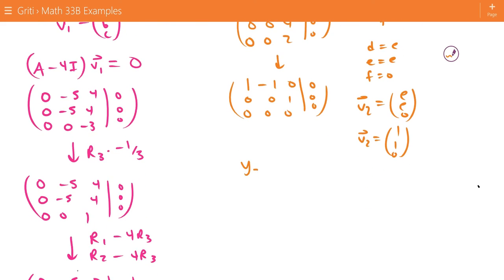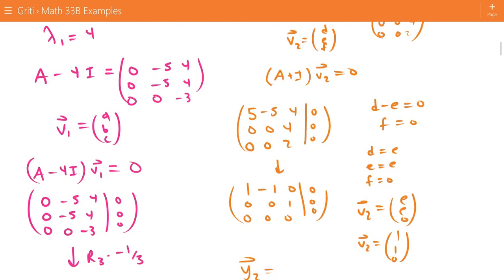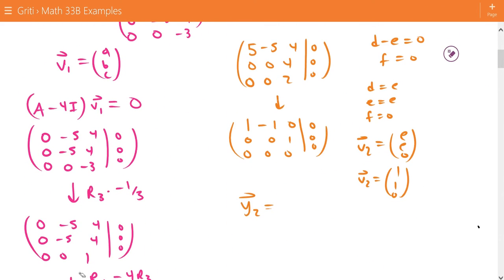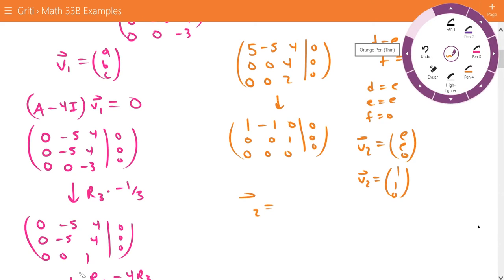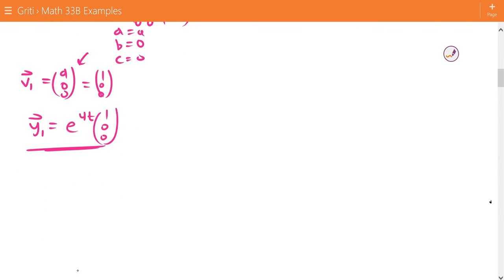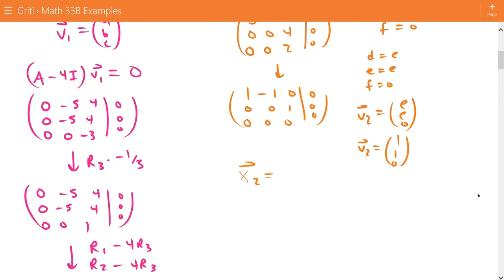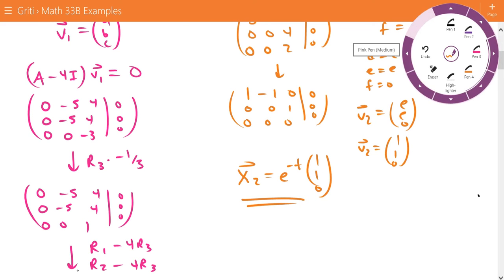So that means our second solution, X2, and this should actually be X because we're using X as our variable. So X2 is going to be equal to e to the negative t times 1, 1, 0.